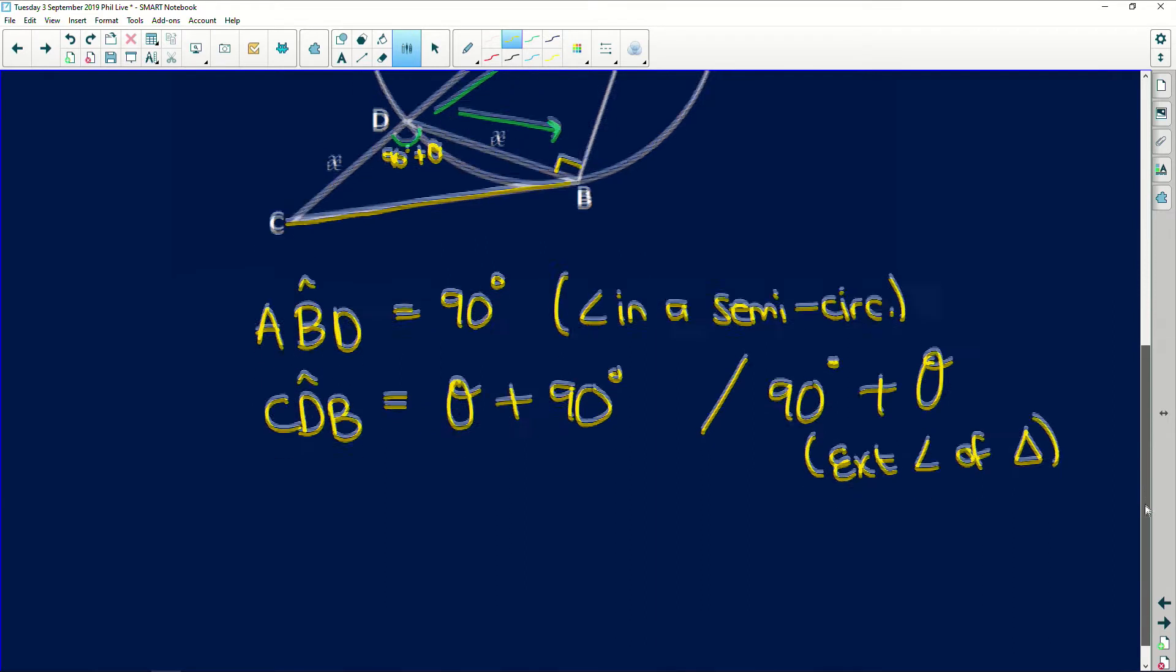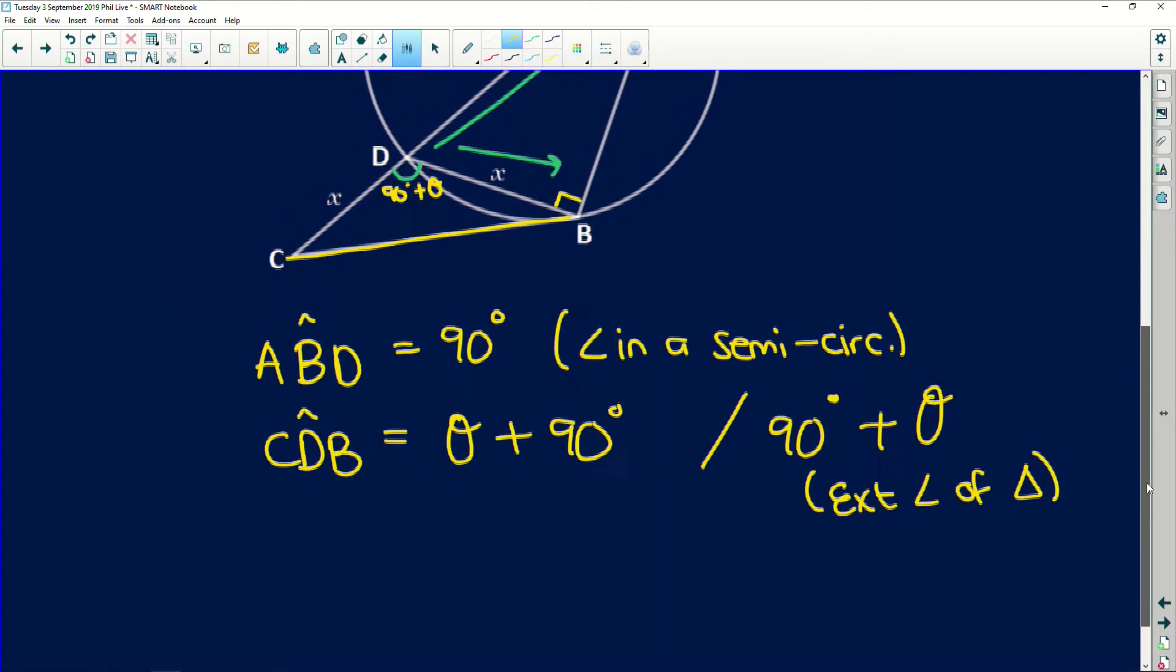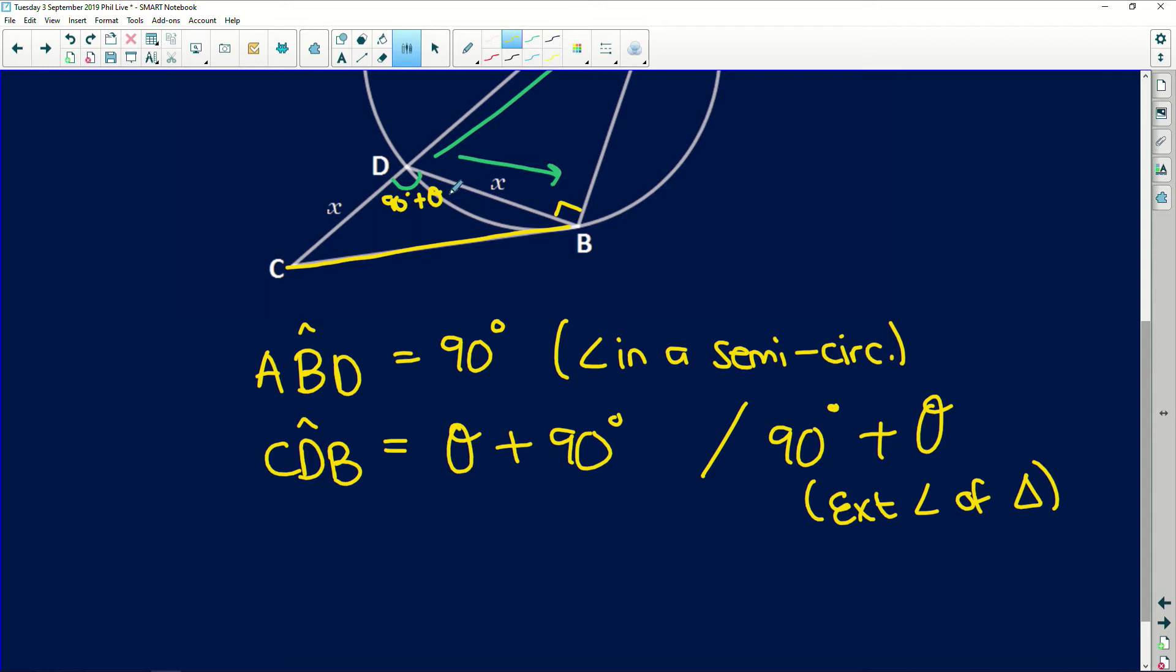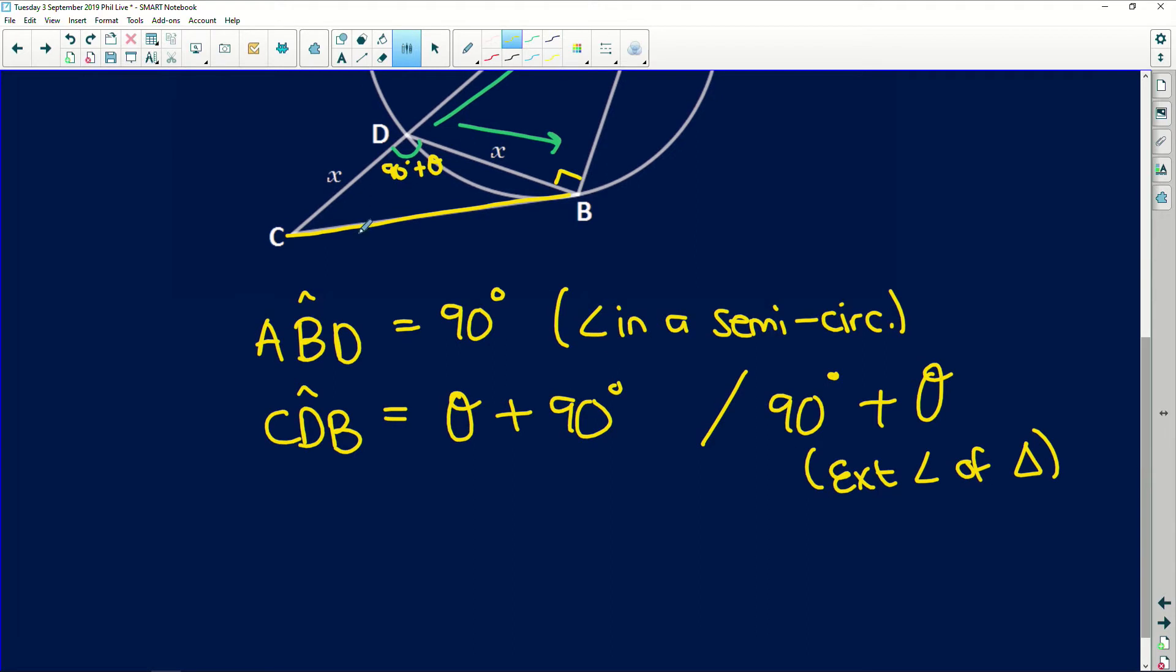So now we have an expression here. We have 90 degrees plus theta. So now, cosine rule. We're going to be dealing with the cosine rule in this triangle here. So BC squared, this side, is equal to X squared plus X squared because they are both X, minus twice their product multiplied by cos of the included angle, 90 degrees plus theta.